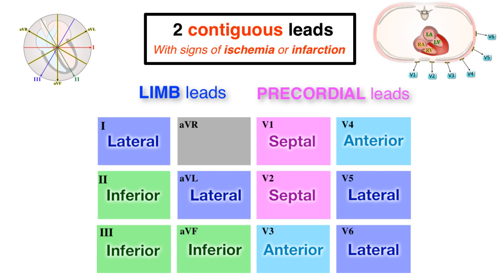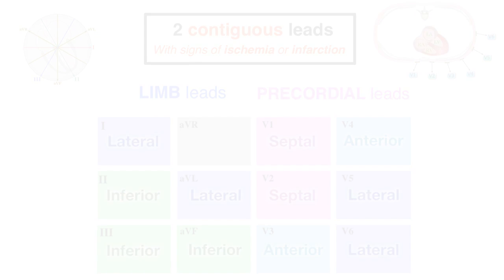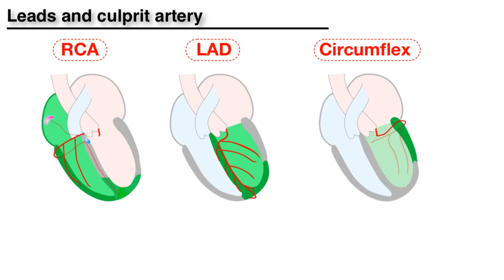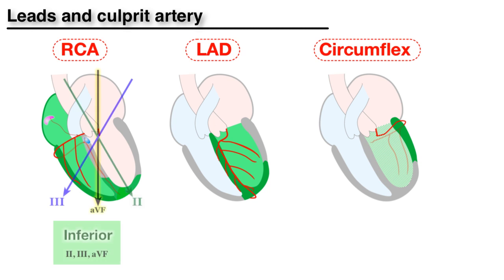Finally, let's match the leads with the corresponding coronary artery. Take a moment to pause the video and, with what you learned in this video and the last, match the following coronary arteries with the appropriate leads. RCA ischemia will most likely be seen in the inferior leads — leads 2, 3, and AVF.